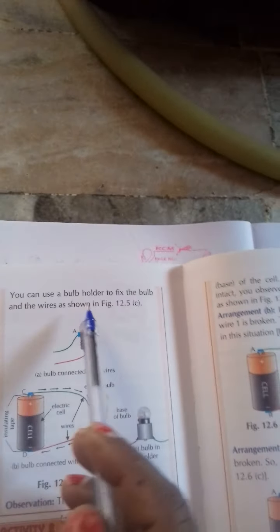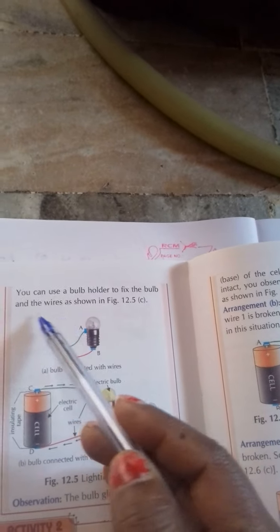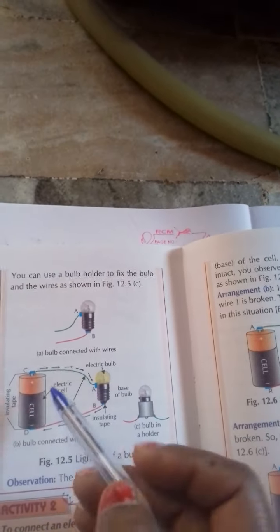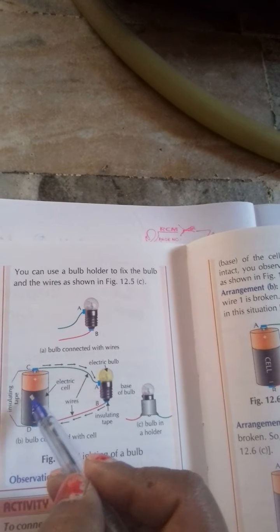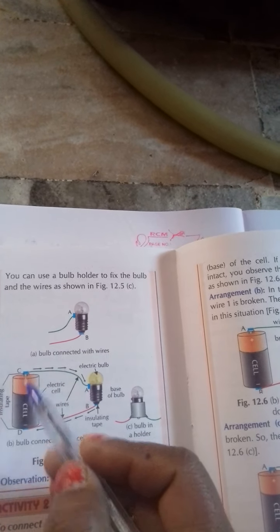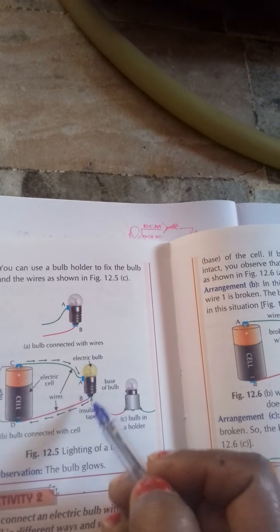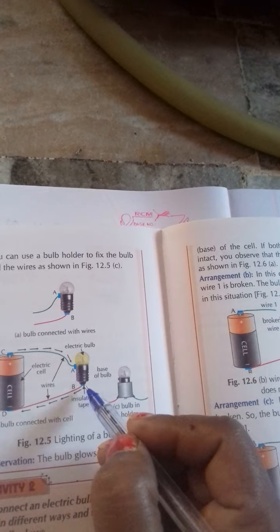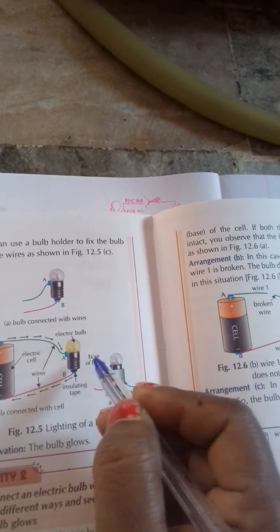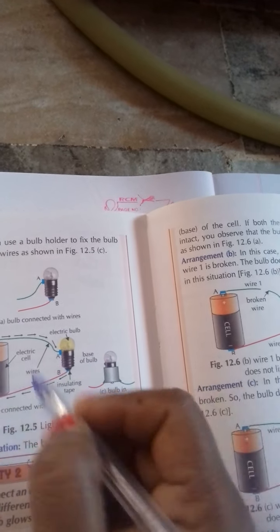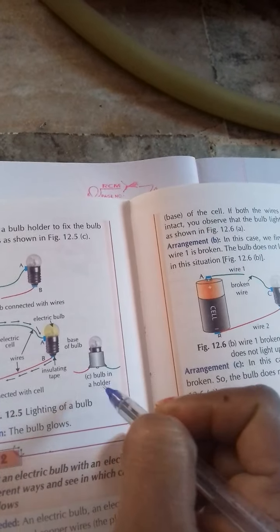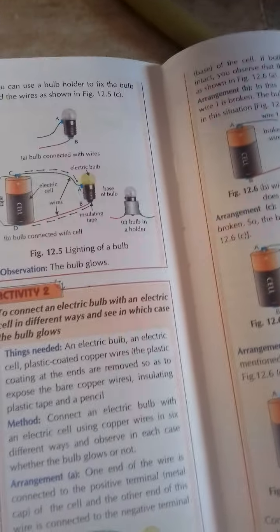What do you observe? You can use a bulb holder to fix the bulb and the wires as shown. When you take one cell with the positive terminal and the negative terminal, the two of them are connected to the bulb. One is placed on base and one is placed on top of the bulb. The bulb lights up.